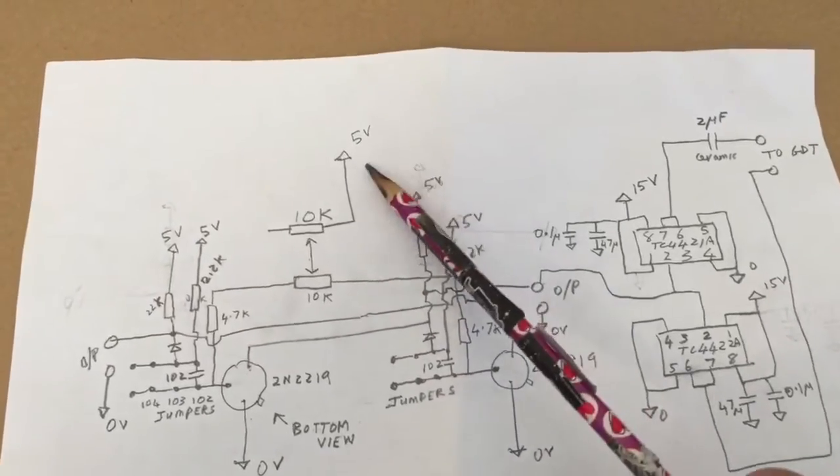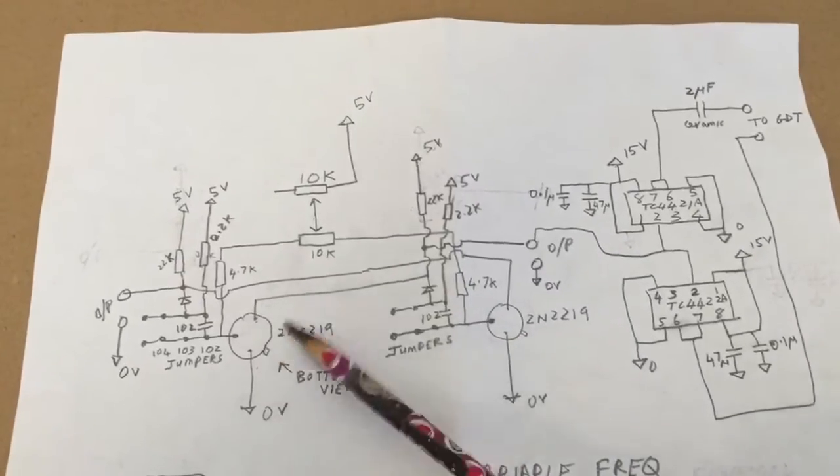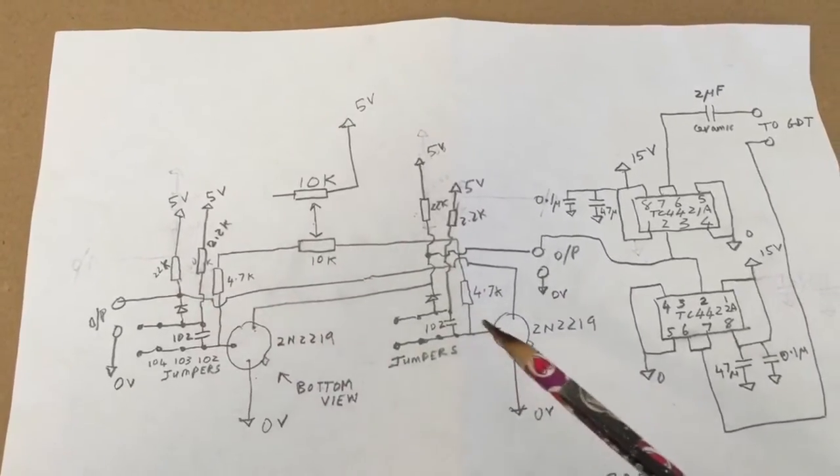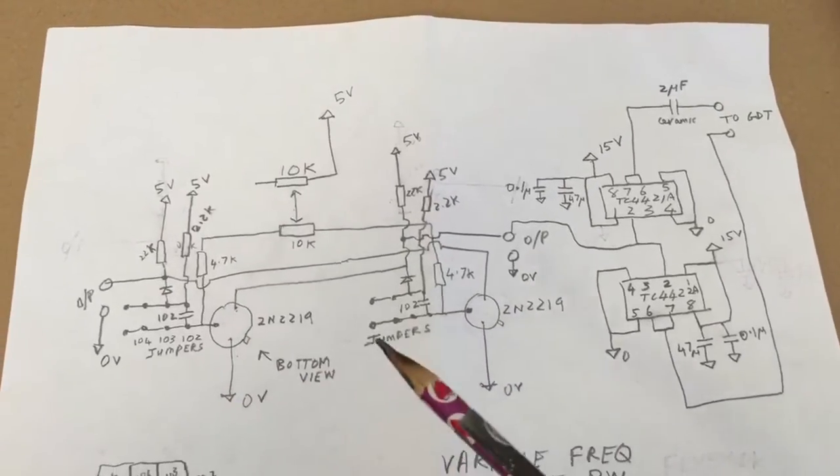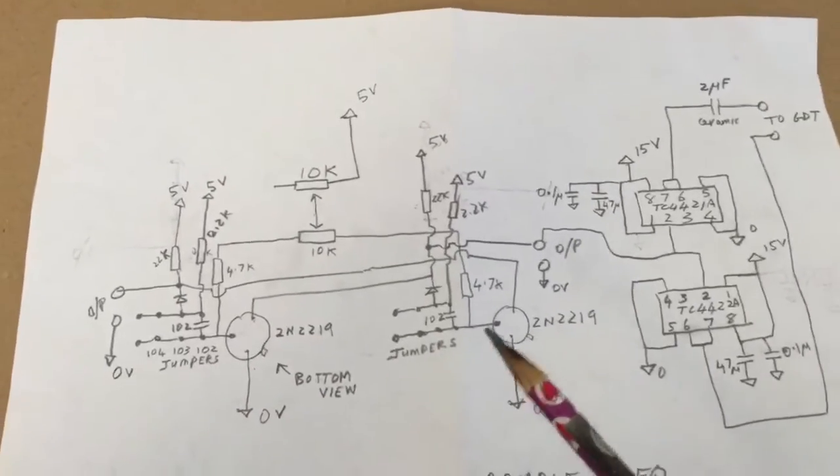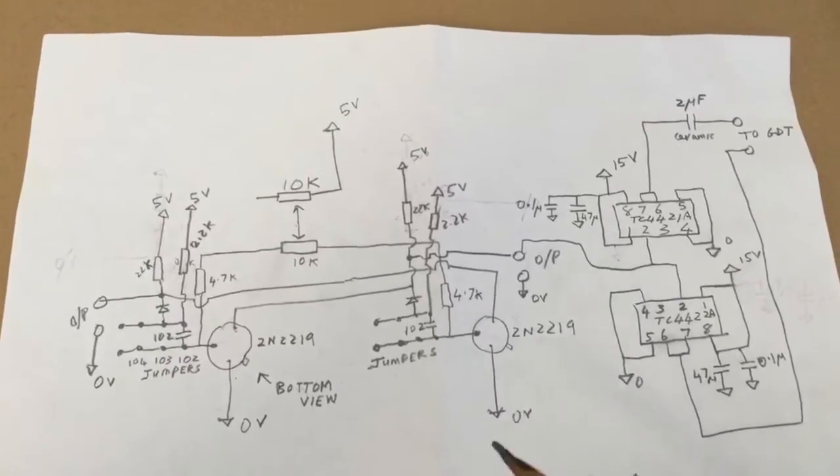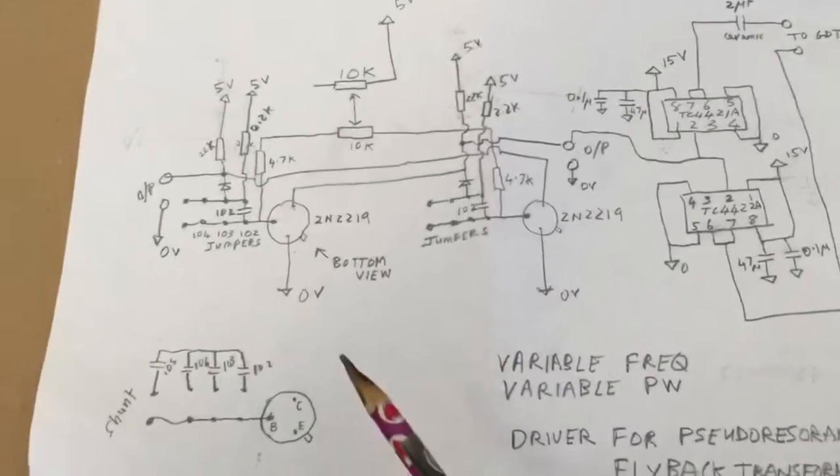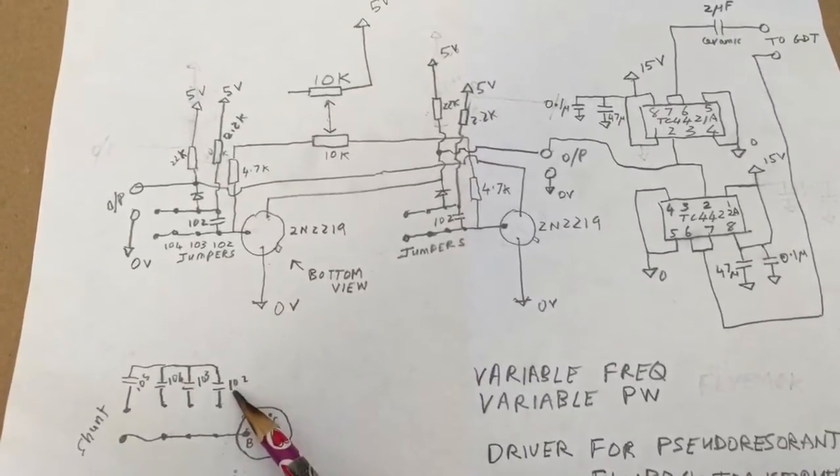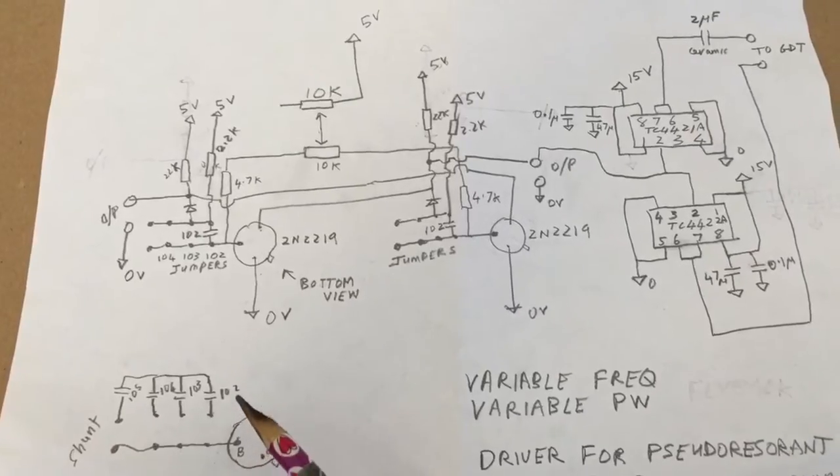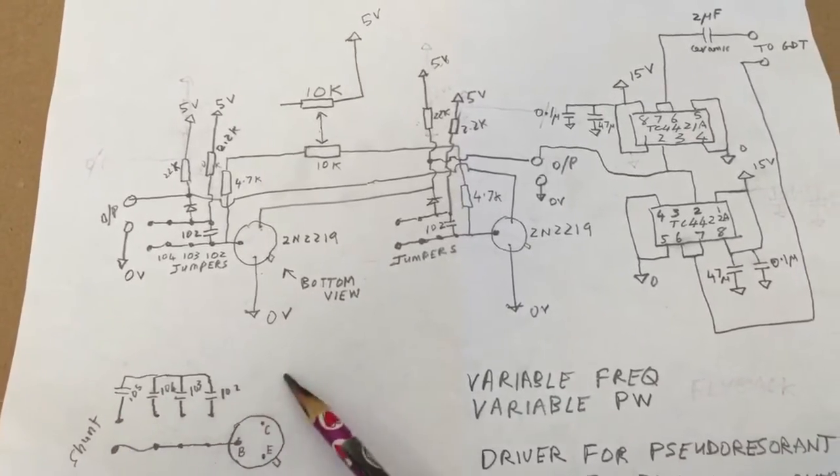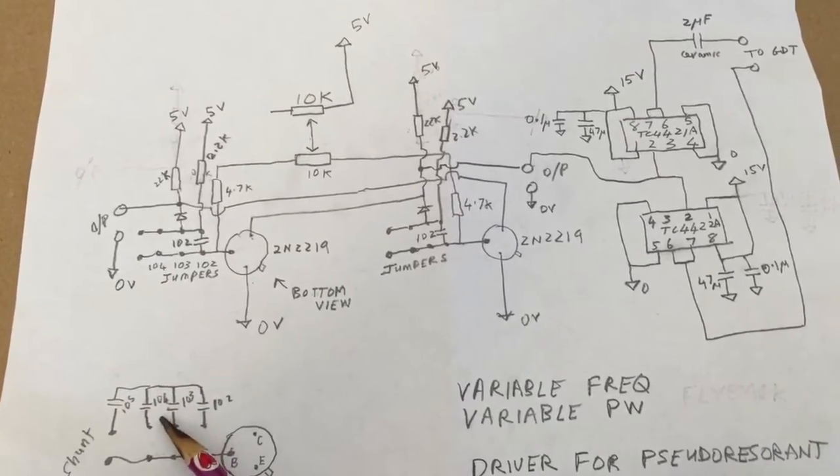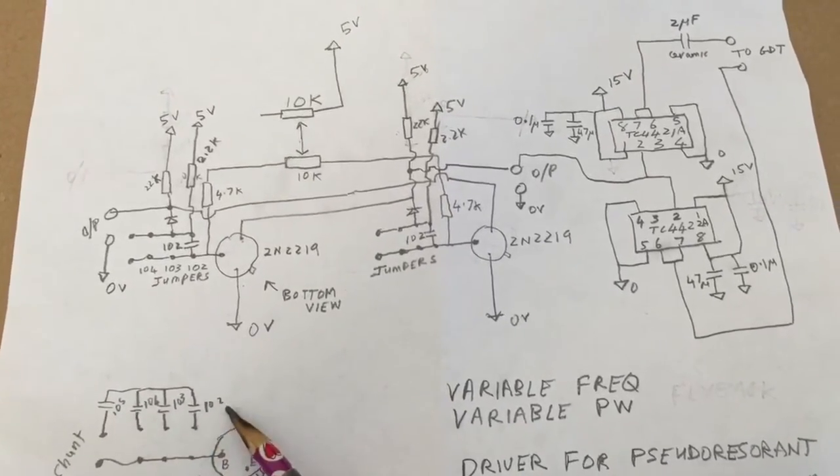This whole thing is driven at 5 volts DC, which seems to work well with these transistors. These are some of the values of the components that I used. What I did to vary the frequency ranges, which is important when you're trying to find something that will work with your flyback, is I put a bunch of jumpers. This is the configuration of jumpers containing respectively the following capacitors.